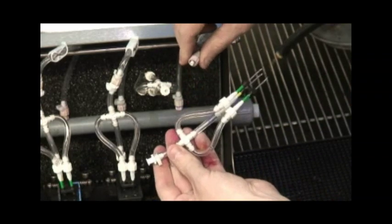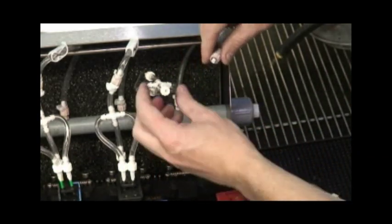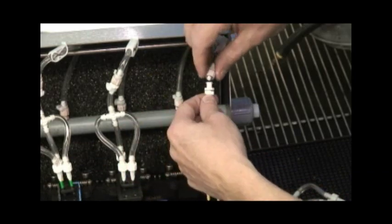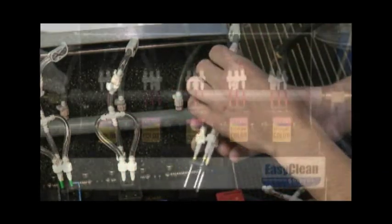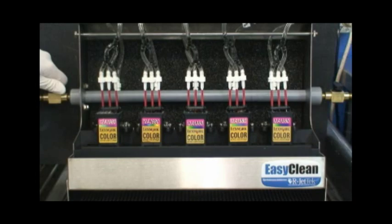Changing the needle guides takes only seconds. Additional needle guides can be purchased from our Jet Tech. This will allow you to flush five of the same type cartridge at once, so it is a great system for high production remanufacturers.